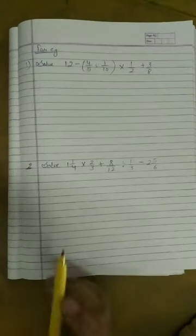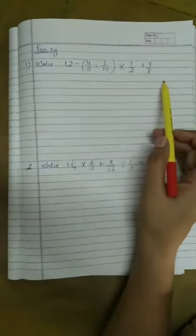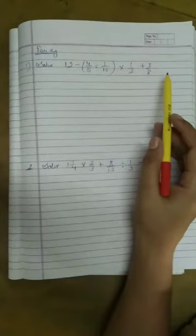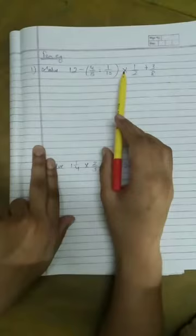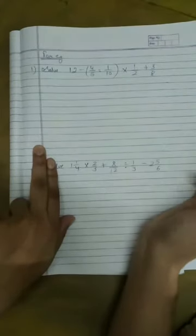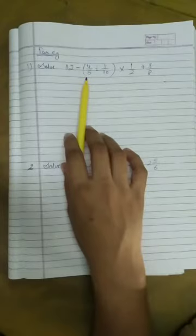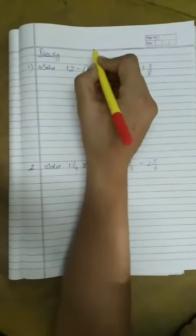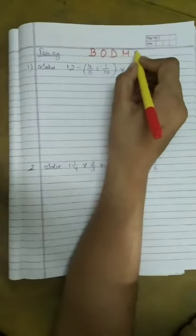For example, we have two questions here. This is the expression having more than one operation. Here, minus, divide, multiply and plus, all the operations are together. So we have to solve this expression by using BODMAS rule. We have to follow BODMAS rule, B-O-D-M-A-S.